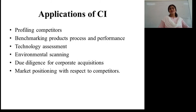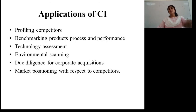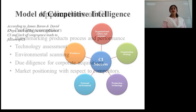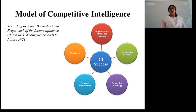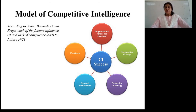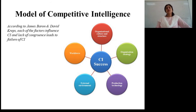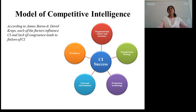Competitive intelligence can be applied in various places: profiling competitors, benchmarking product processes and performance, technology assessment, environmental scanning, due diligence for corporate acquisition, and market acquisition with respect to competitors. There is a model given by James Warren and David Krebs, who said that certain factors make competitive intelligence a success in a company. These include: organization culture and structure, how the organization is structured and what strategy it is following, what production technology they are using, what the external environment threats are and how they are affecting the company, and what talent mix their workforce has.